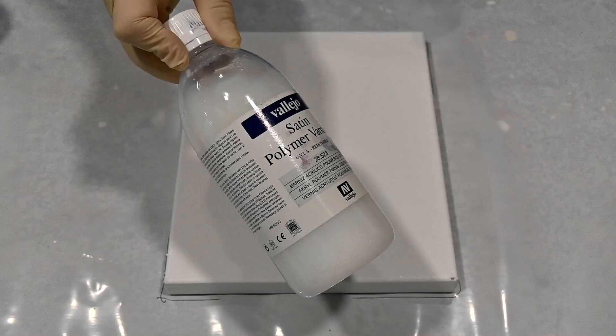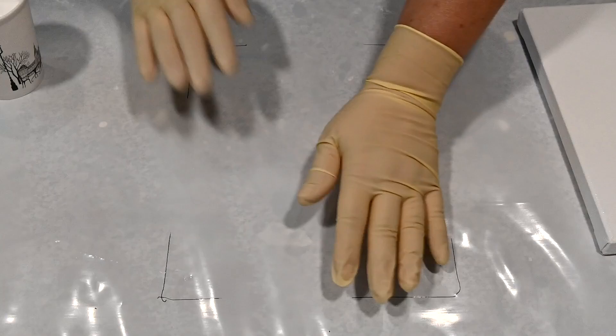And this is not enough. I mixed a little bit of this satin polymer varnish into my white for the base and my pouring medium of course. And I will do a dip.